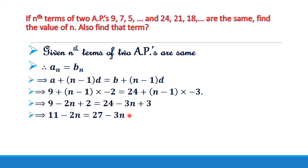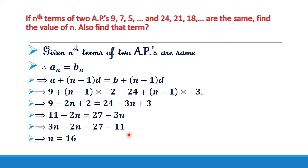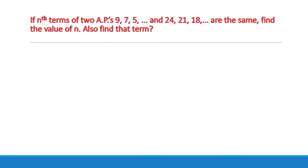Taking N to one side: 3N − 2N = 27 − 11, which gives N = 16. Therefore, the 16th term of these two APs is the same.